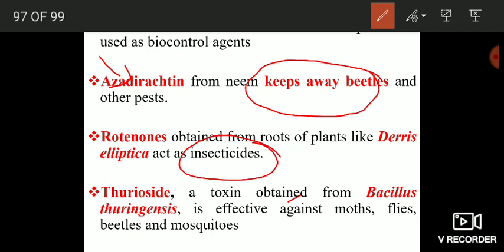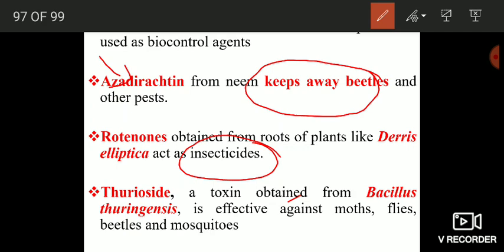Rotenones, obtained from the roots of plants like Derris elliptica, also act as insecticides. Thuricyde is a toxin obtained from Bacillus thuringiensis and is effective against moths, flies, beetles, and mosquitoes. Finally, pyrethrum, obtained from Chrysanthemum — known as big daisy — acts as a natural and safe insecticide. This concludes the topic of biopesticides. Stay blessed and thank you.